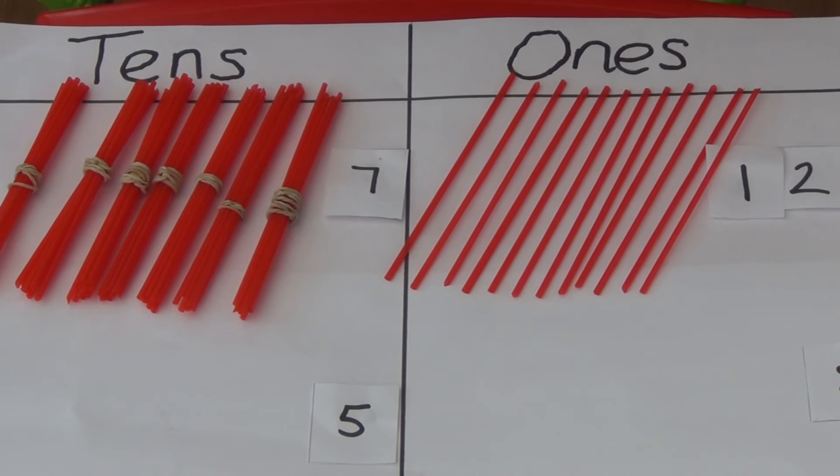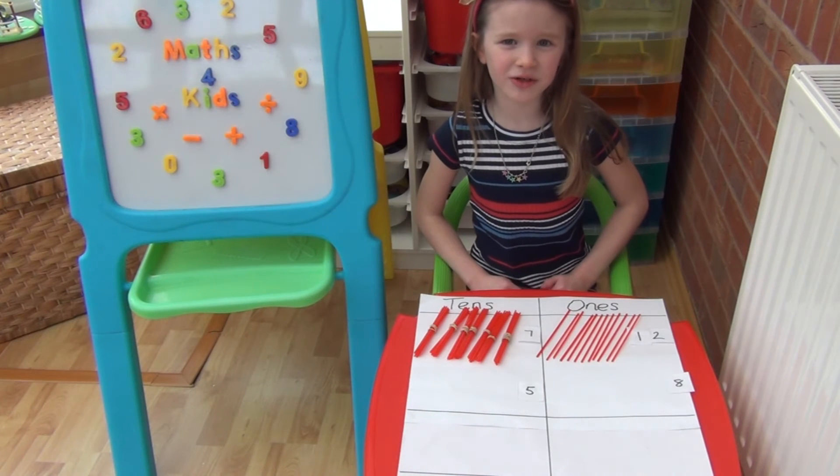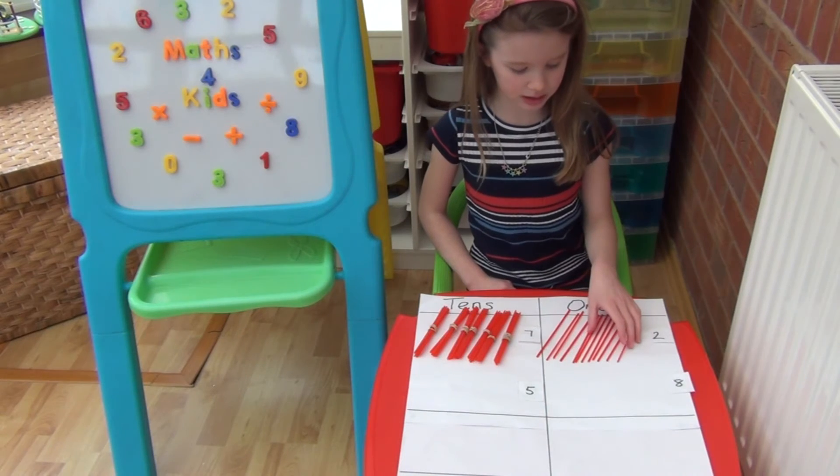So we now have 12 in the ones column and 7 in the tens column. I'm going to take 8 straws from the 12 and put the ones that I have left into the answer box.